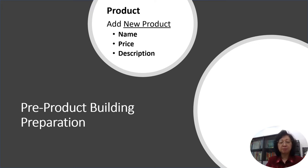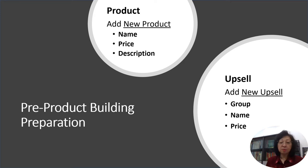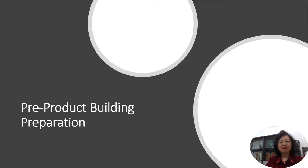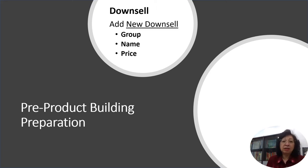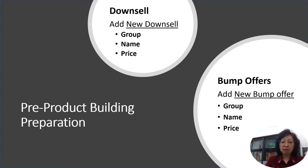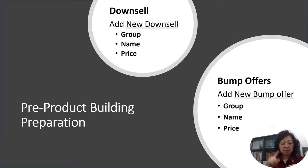What if it's an upsell? You need to add the new upsell to a group, and then you need the name of the upsell and the price. For downsells, same thing — you need the group that the downsell will be attached to, the name of the downsell, and the price. And of course there are the bump offers — you need the group the bump offer will be attached to, the name of the bump offer, and the price.